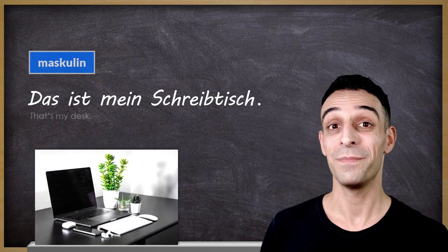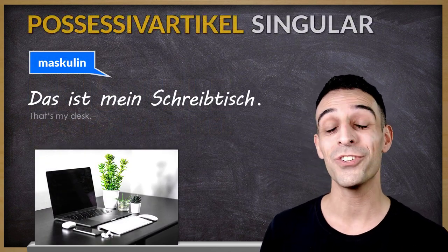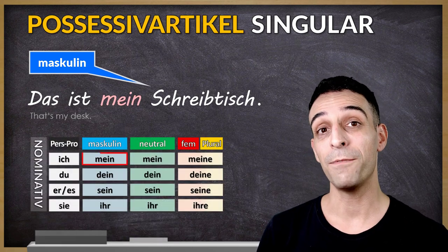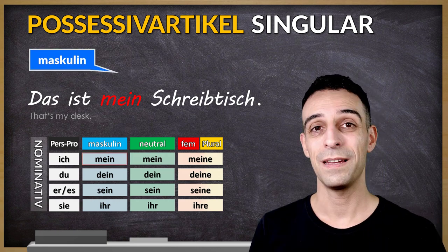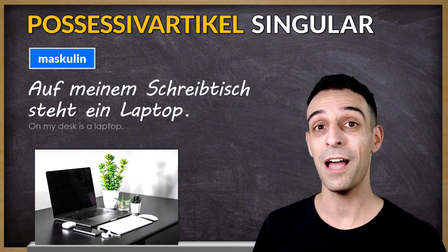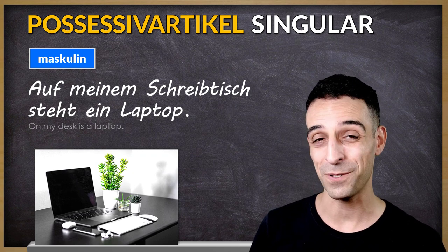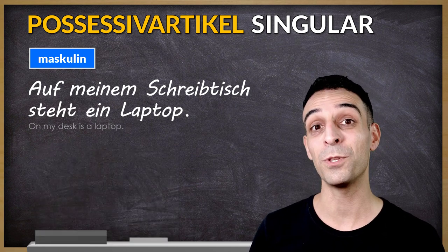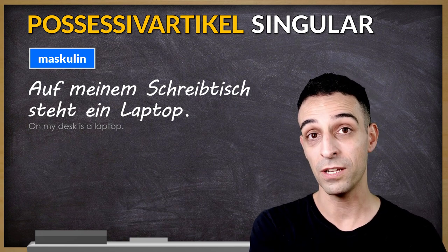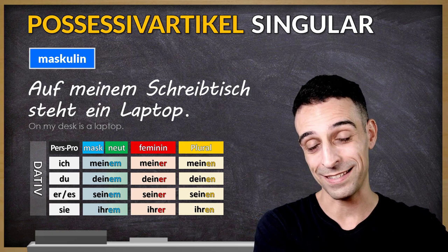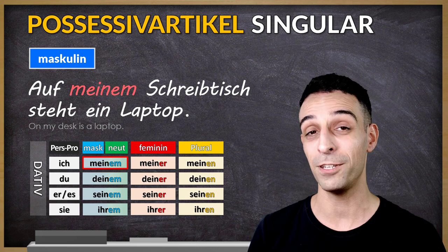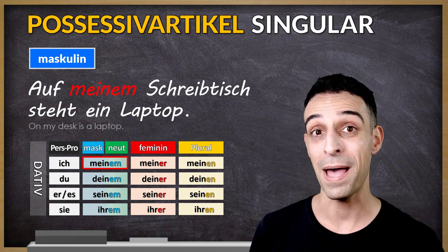Das ist mein Schreibtisch. Schreibtisch is the subject, so we have to use nominative case: mein. Auf meinem Schreibtisch steht ein Laptop. In this sentence, laptop is the subject and Schreibtisch is the location. The laptop is on the desk, there is no movement, and this tells me that I have to use dative case: meinem.